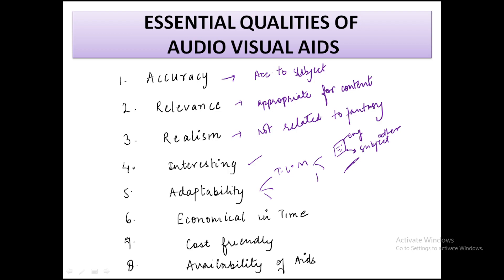Another essential quality is that the aid should be economical and time-saving. The availability of aids is also very important — if an aid is easily available, it saves energy and time. If it is a difficult-to-obtain aid, a lot of energy and time will be wasted in finding it. So, easy availability is one of the key qualities of audio-visual aids.